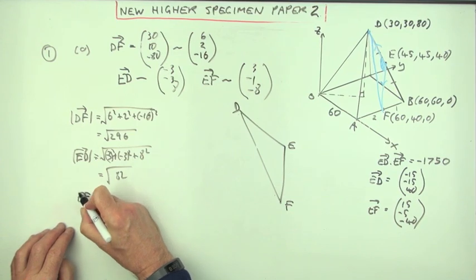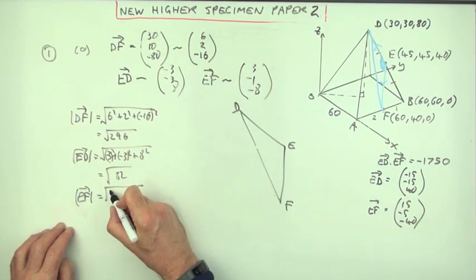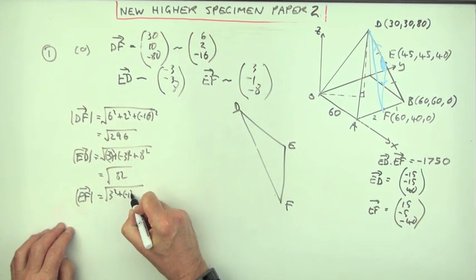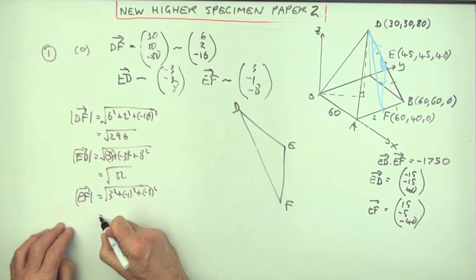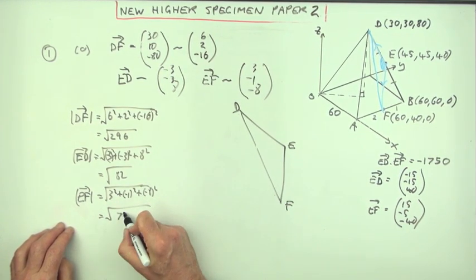Now what's the length of EF? In my scaled down one, that would be 3 squared, and negative 1 squared, and negative 8 squared. That's the square root of, well that's 9 and 1 is 10, and 64 is 74.